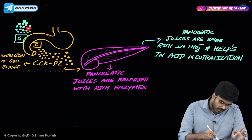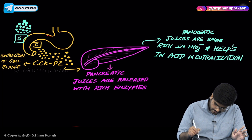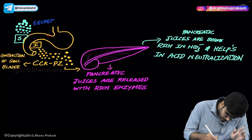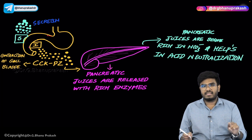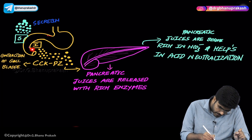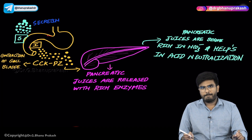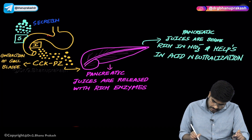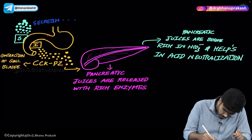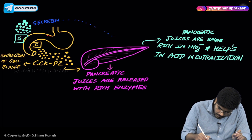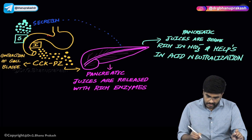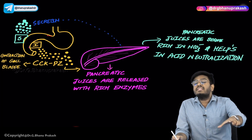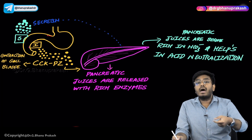The S cell produces secretin — S cells for secretin. The I cells produce cholecystokinin-pancreozymin. When secretin molecules come and act on the pancreas, the pancreatic juices become more alkaline in nature. Under the influence of secretin, the pancreatic juices become rich in bicarbonates, and these bicarbonates help in neutralization of acids.